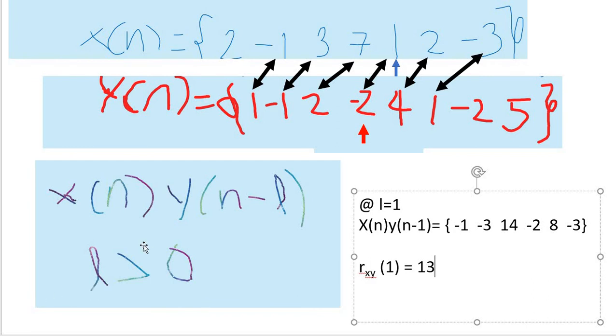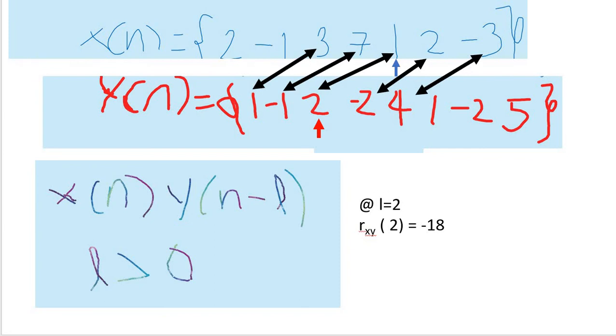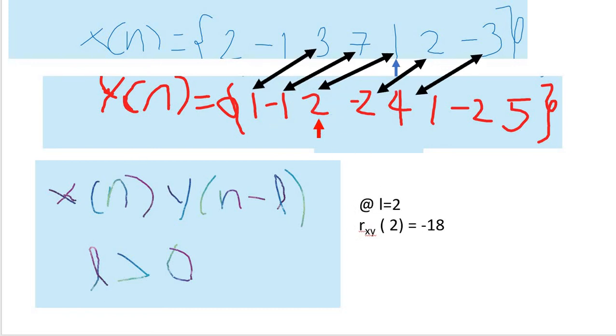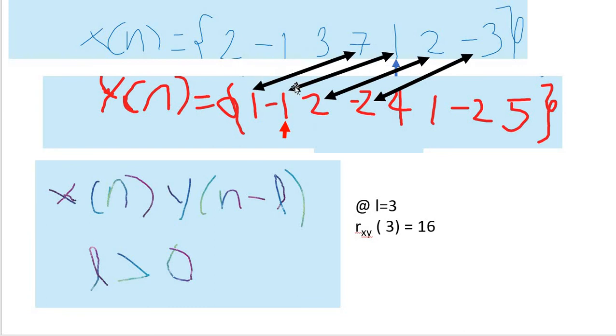The next step would be at L equals 2. And if you did what we did before, it would be -18. At L equals 3, as you can see, we've just moved the arrow. We move it from here. And then, as you can see, we're pointing it out again to the origin. Because x(n) is not moving, only y(n). If you do that, again, 16.